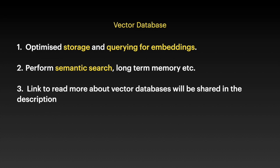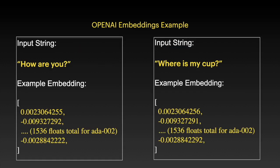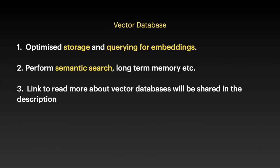One more thing to mention: when we store embeddings, an embedding is just a list of floating point numbers, so we don't know which text this embedding is for. If we just save the embedding, we don't know which string it's attached to. So in vector databases, we have a concept of metadata, where we can save the embedding with the metadata. In the metadata, we will mention the text for which this embedding is.